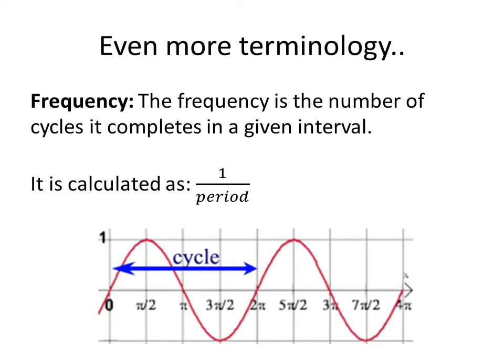The last key piece is that of the frequency. The frequency is simply the number of cycles it completes in a given interval, and it's calculated as 1 divided by your period. In most cases, the frequency is just dependent on how much of the graph you're actually seeing.